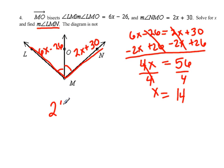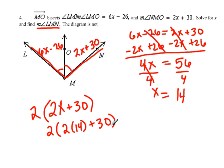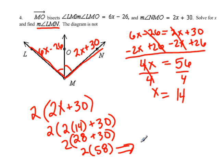And I'm going to use this value of 2x plus 30. If I find out what that is, in order to find LMN I would double it or multiply it by 2, and that would give me the whole angle of LMN. So that gives us 2 times 2 times 14 plus 30, so we have 2 times 14 is 28 plus 30, still bringing down the 2, 2 times 58. And thus the measure of angle LMN is 116 degrees.